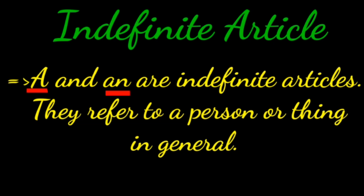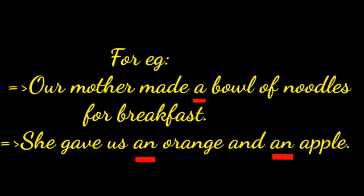So what are indefinite articles? A and an are indefinite articles. For example: Our mother made a bowl of noodles for breakfast. She gave us an orange and an apple. In these sentences, the articles a and an do not refer to any particular bowl, apple, or orange — they are mentioned in general. So these are indefinite articles.